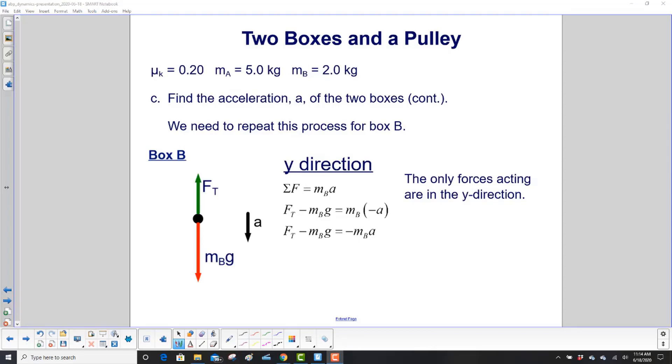We only have forces acting in the y direction. We've got tension going up and gravitational force going down. The acceleration is in the down direction also. So the sum of the forces is M sub B times A. Tension's positive, up direction.